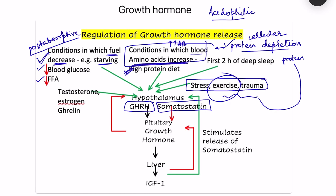Other stimuli include hormones such as testosterone and estrogen, which is why there is a growth spurt at puberty when these hormone concentrations are high. Another stimulus is ghrelin, released from the stomach — a useful mnemonic is that 'gh' in ghrelin stands for growth hormone releasing, as it causes growth hormone release.